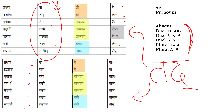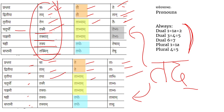This pronoun pattern applies to many Sarvanama shabdas — for example, Sarva. In Pulinga: Sarvaha, Sarvau, Sarve in Prathama. Notably, even though Sarva is an akarantha Pulinga word like Rama, its Chaturthi (fourth case) is Sarvasmai — not Sarvaya like Rama — because it is a pronoun. Similarly, Sarvasmaat, Sarvasya, Sarvasmin in the singular.